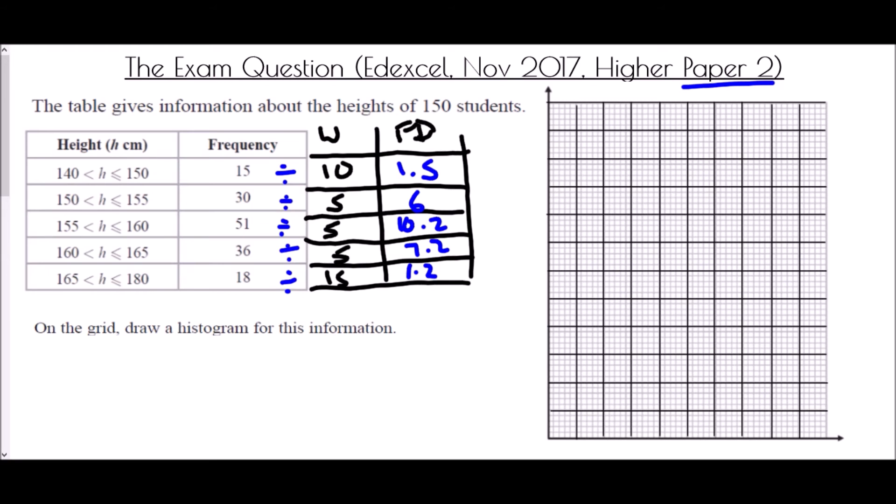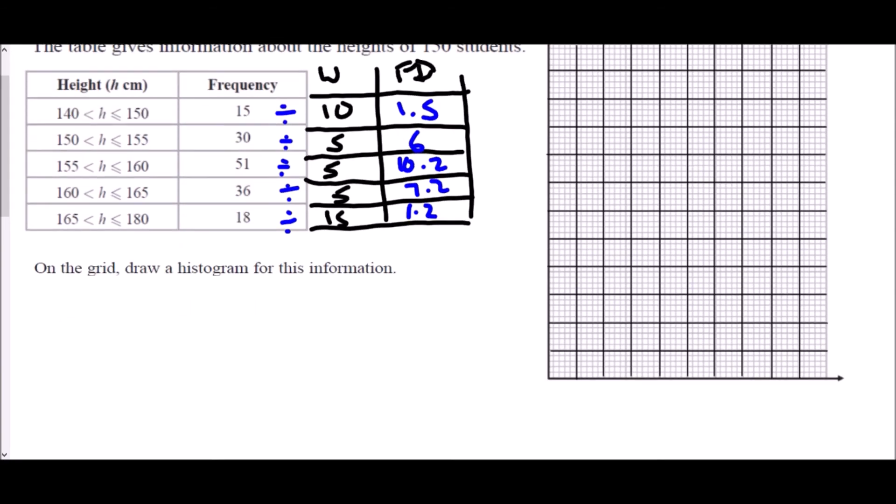But what we now need to decide is looking at the grid, we don't actually have any information whatsoever written on here, so we need to decide how we are going to set this out. First of all, let's have a look at the heights. The height is what is going to be along the bottom of our graph, and it begins at 140. Given that nobody was below 140, we don't need to start at 0. There are 10 spaces available. So if we take this as 10 at a time, we go 150, 160, 170, 180, 190. That is going to cover everything that we have in our grid from 140 to 180. So we have our heights and we just place that as centimeters.